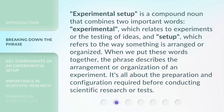Experimental setup is a compound noun that combines two important words: experimental, which relates to experiments or the testing of ideas, and setup, which refers to the way something is arranged or organized. When we put these words together, the phrase describes the arrangement or organization of an experiment. It's all about the preparation and configuration required before conducting scientific research or tests.